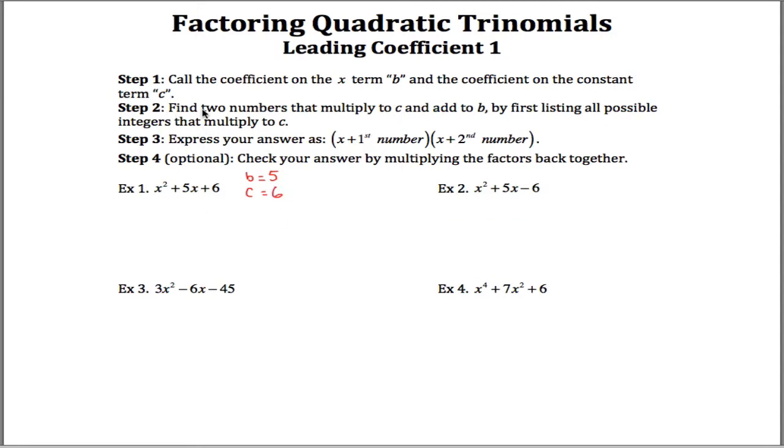And so what you want to do in step 2 is you want to find 2 numbers that multiply to 6 in this case and add up to 5. You might be able to just do that in your head, but sometimes the numbers will get bigger and it'll be a little bit more difficult to do that. So the way I do it, something that will help when these numbers get larger, is look at the c. Don't look at the b, don't look at the 5, just look at the c and find all possible integers that multiply to 6. In this case, that's either 1 times 6 and 2 times 3.